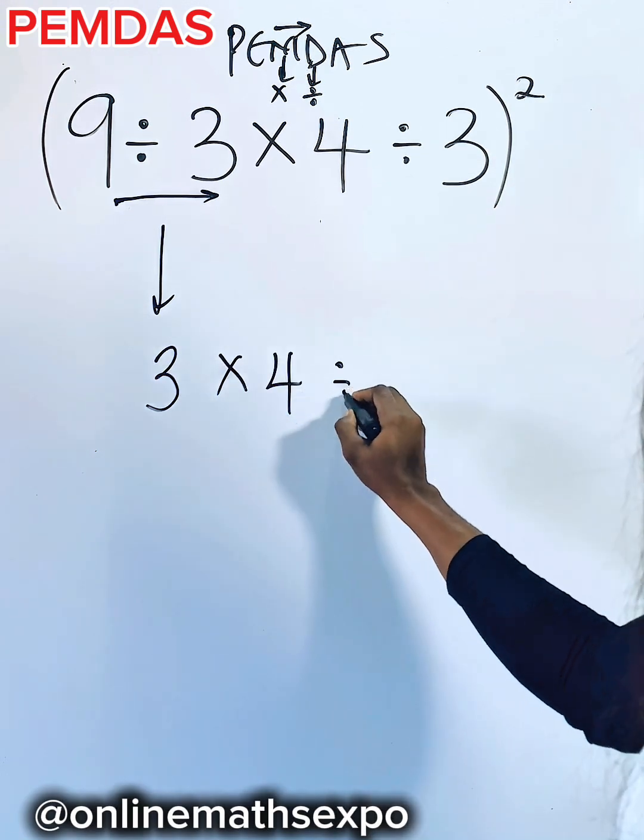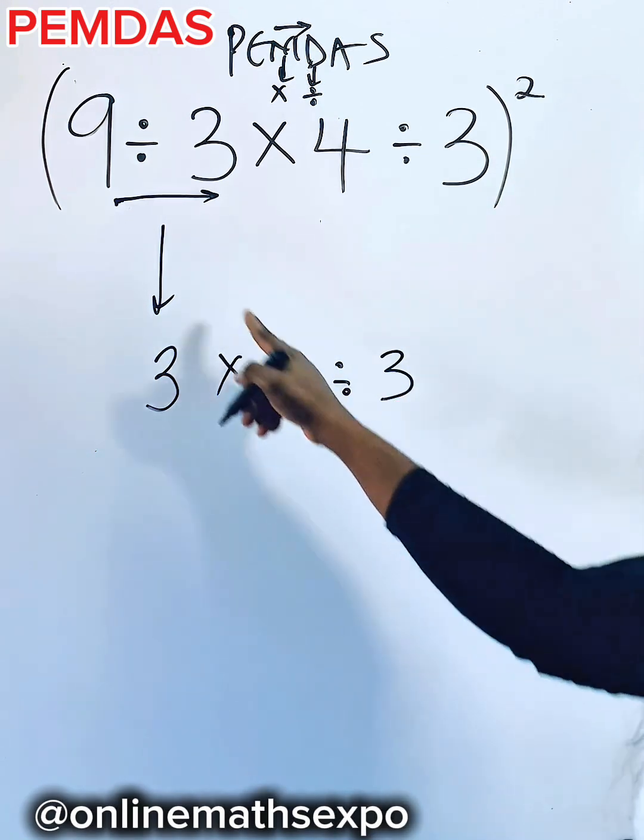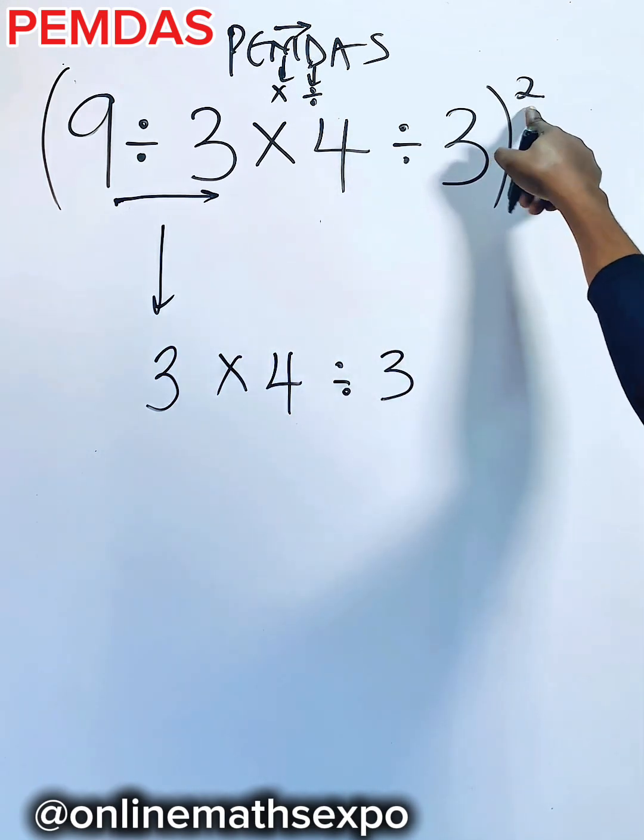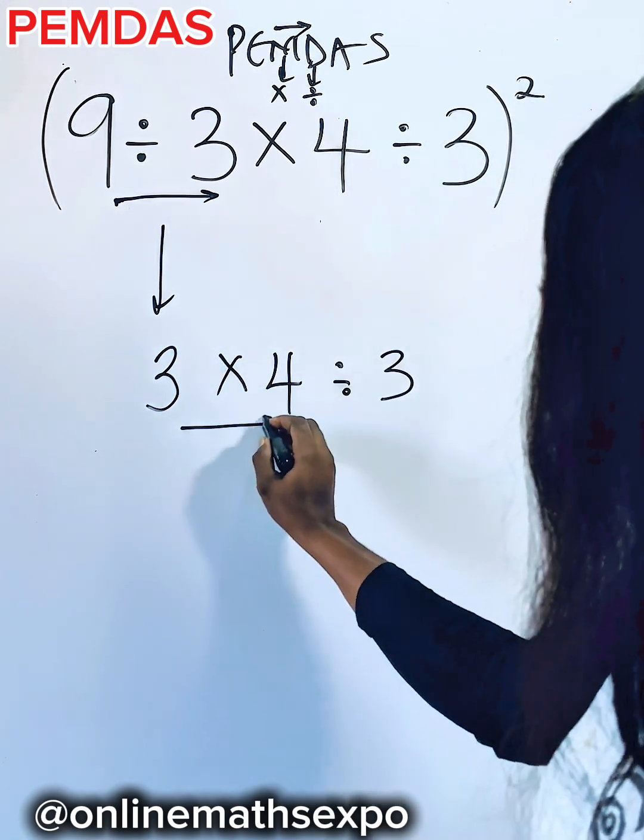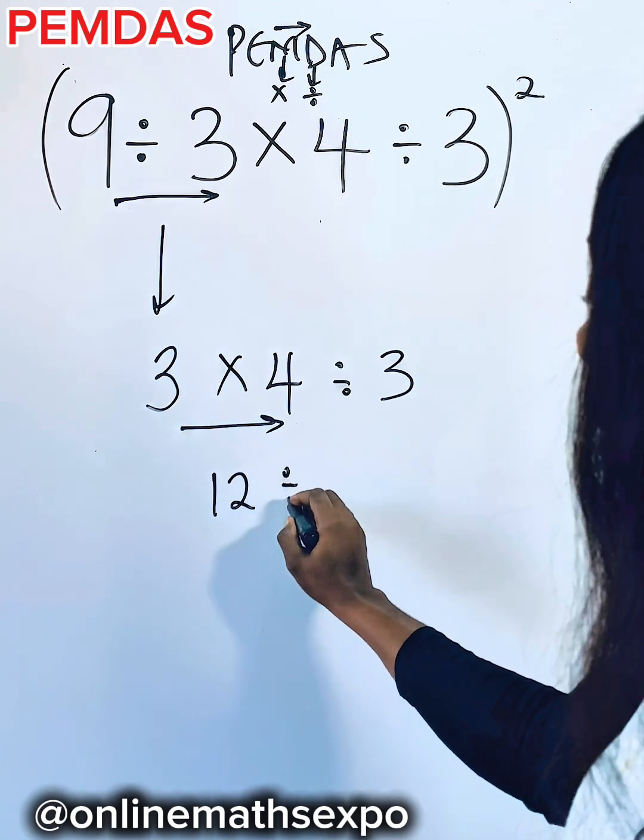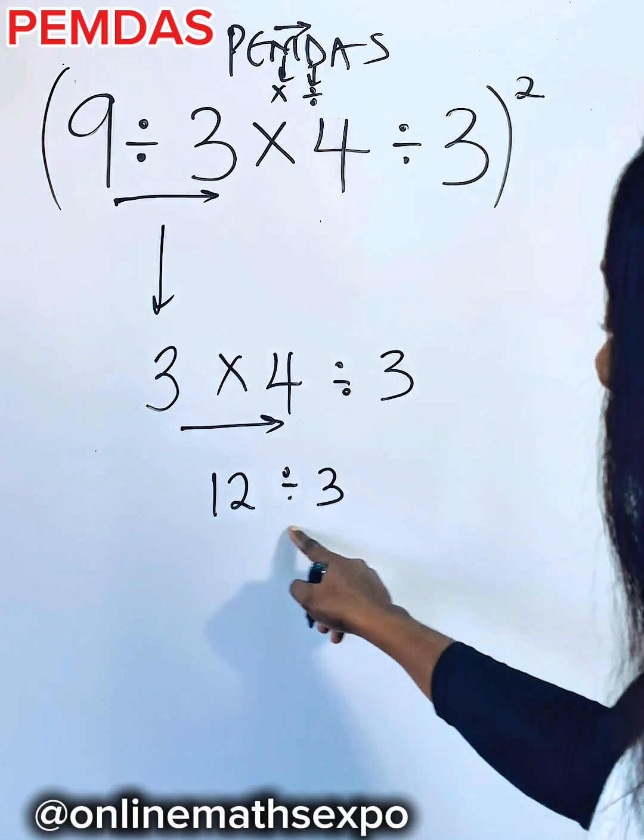Multiplied by 4 divided by 3. So we are working with the bracket first before we go to this exponent. So what do you do again? Deal with this. 3 times 4 will give us 12, then divided by 3. So now we can do this.